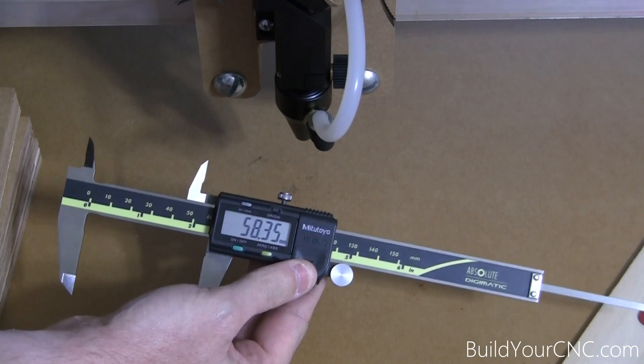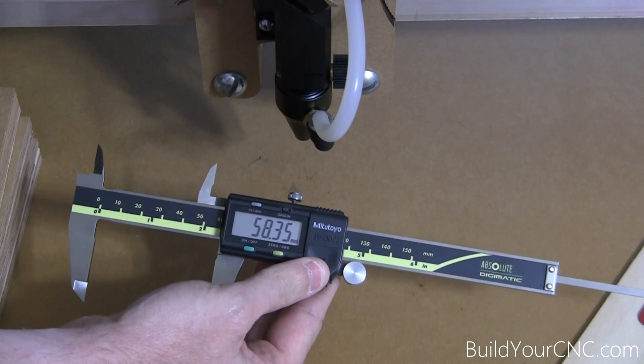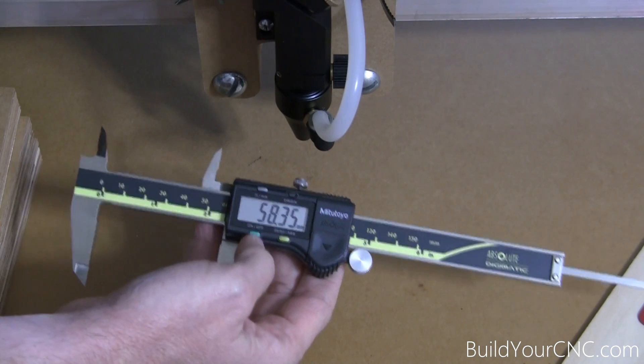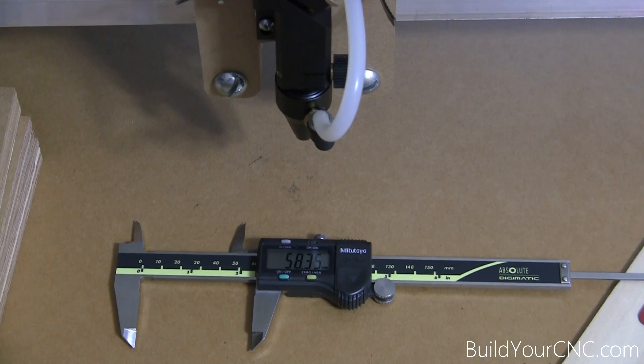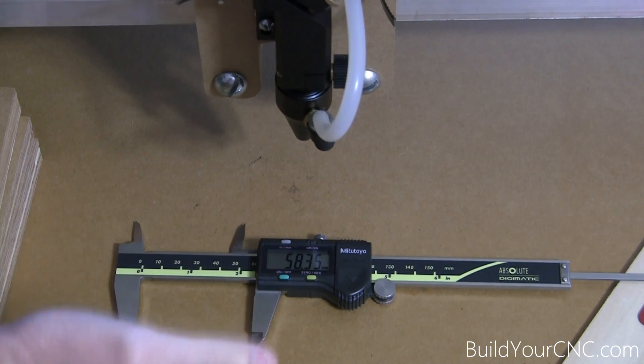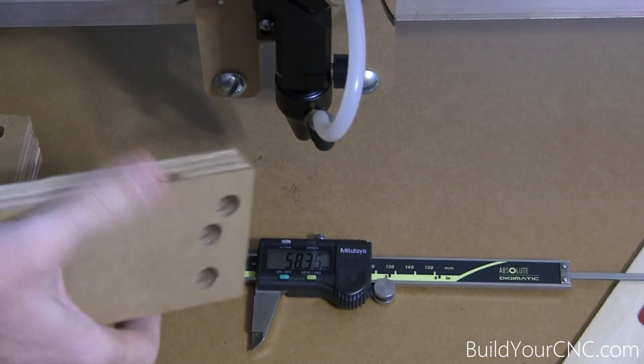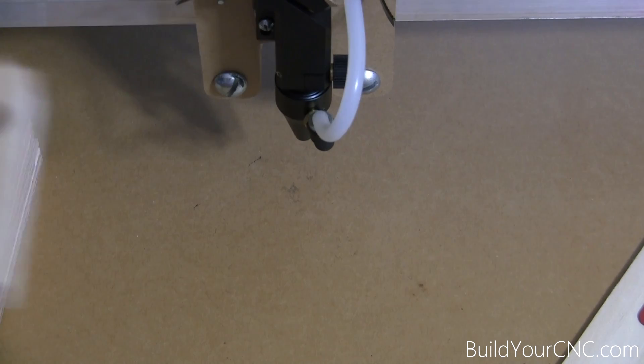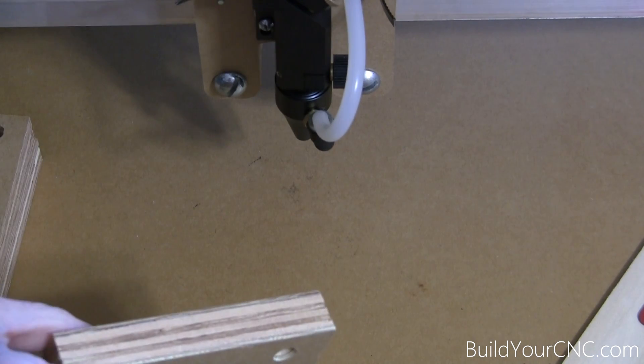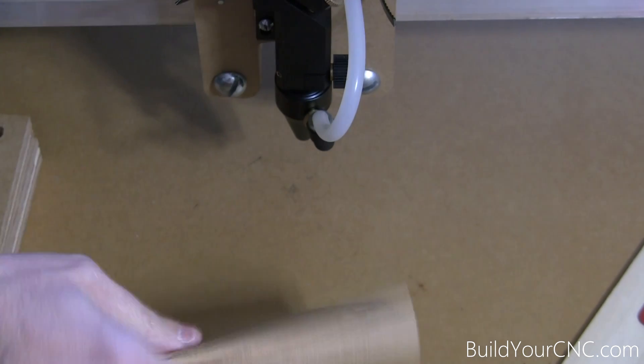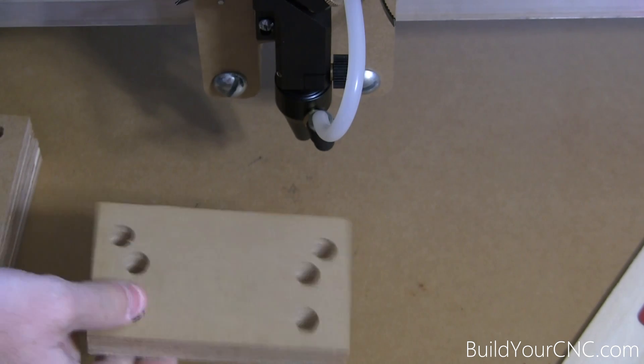We're going to subtract 38.88 from the 58.35 and we'll have 19.47 millimeters. So we have to create a block, some kind of block that is 19.47 millimeters. This block of wood is actually 19.10 millimeters, so that is sufficient for this purpose.